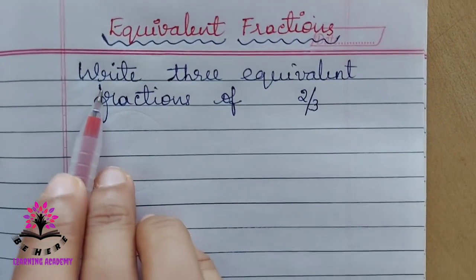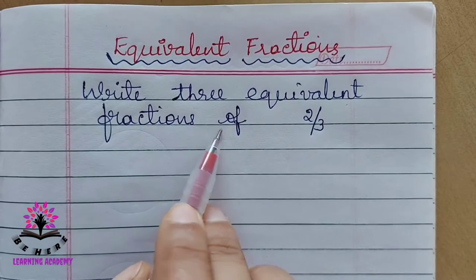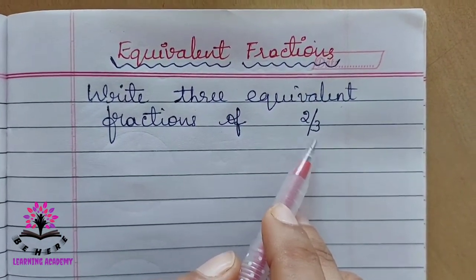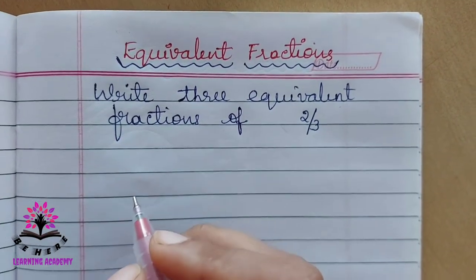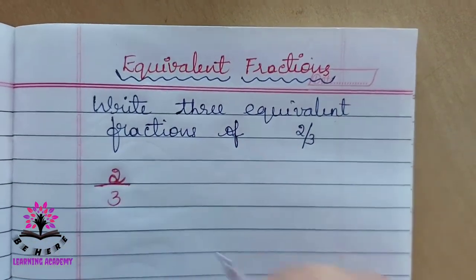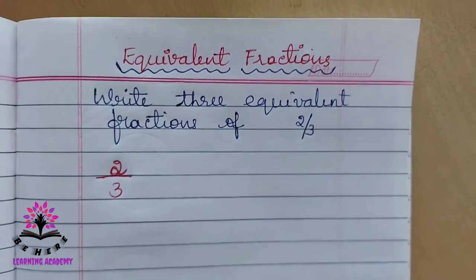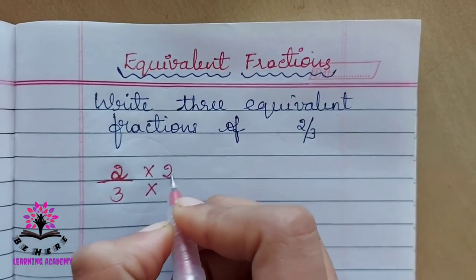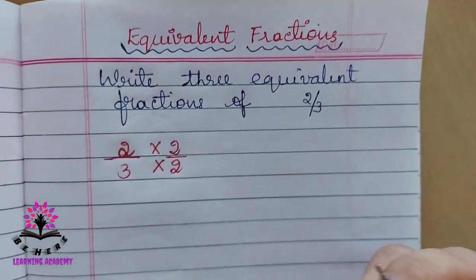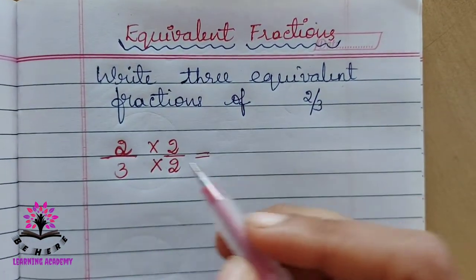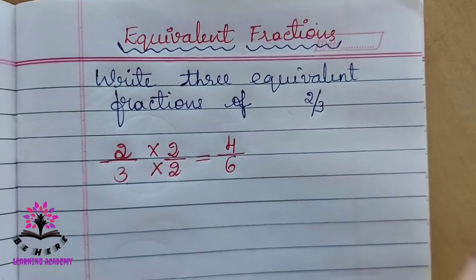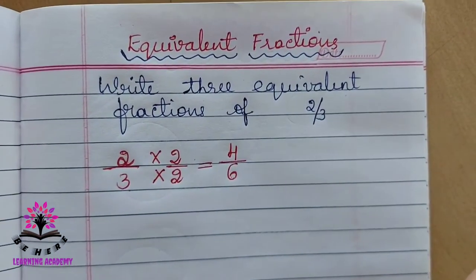See the question here: write three equivalent fractions of 2/3. How to find out the equivalent fractions of 2/3? First, you write 2/3 as it is, then multiply the numerator and denominator both by two. Two times two is four, three times two is six. So 4/6 is one of the equivalent fractions of 2/3.